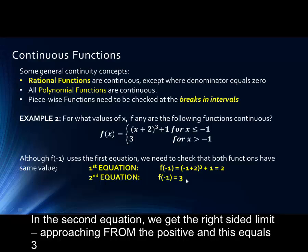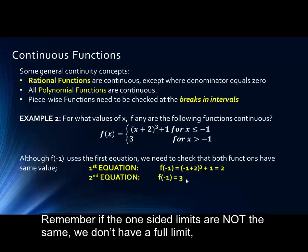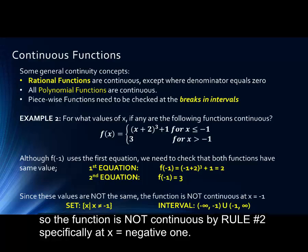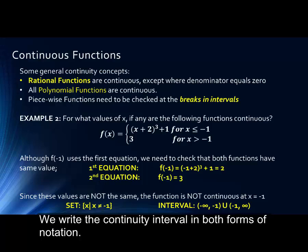Remember, if one-sided limits are not the same, we don't have a full limit. So the function is not continuous by rule number two, specifically at x equals negative one. We now write the continuity in both forms of notation, set and interval.